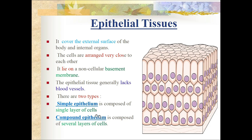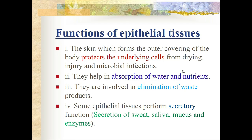Epithelial tissue is of two types: simple epithelium, if they have only one layer of cells, and compound epithelium, if they have several layers of cells. This compound epithelium has several layers of cells.